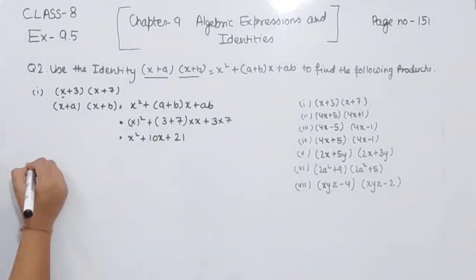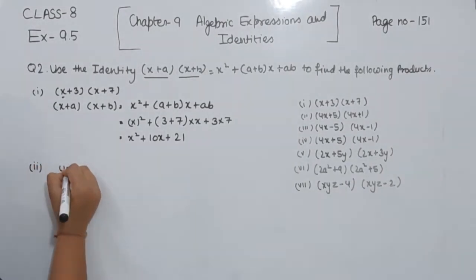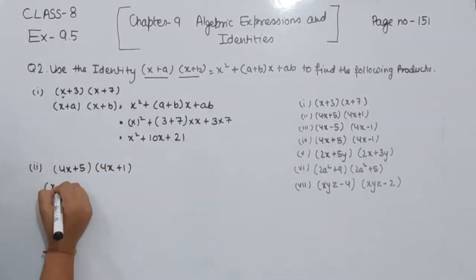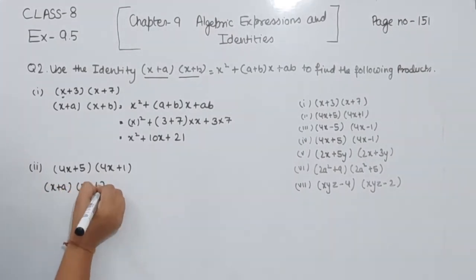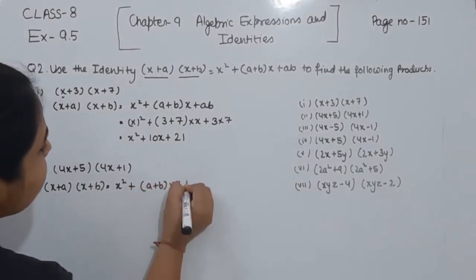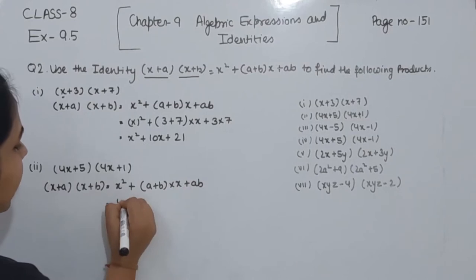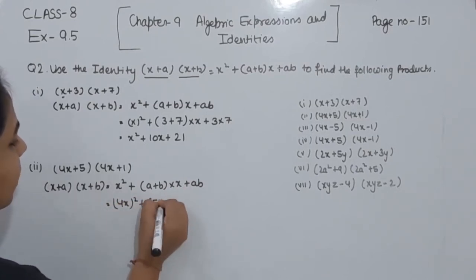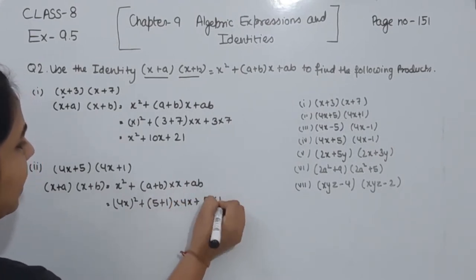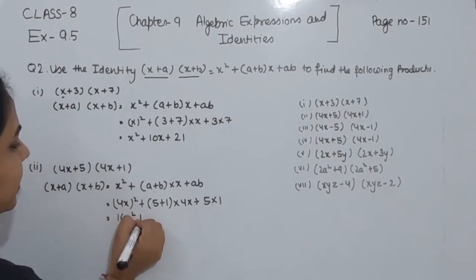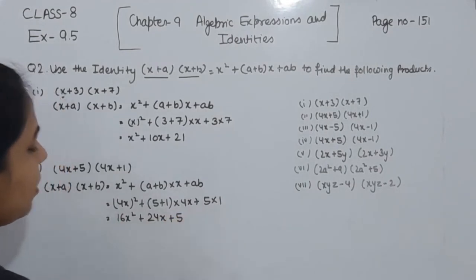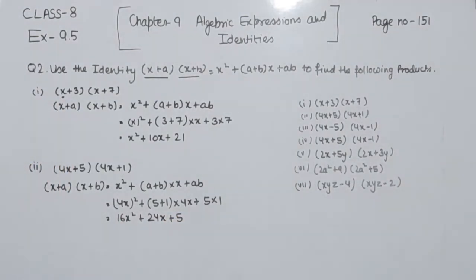Now comes part 2. We are having (4x + 5) and (4x + 1). Using the identity (x + a)(x + b) = x² + (a + b)x + a·b, here x is 4x. So we get 4² = 16, giving 16x² plus (5 + 1) = 6, so 6 multiplied by 4x = 24x, plus 5 × 1 = 5. The solution for part 2 is 16x² + 24x + 5.